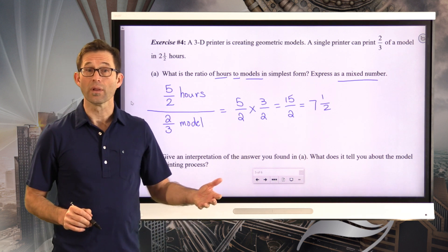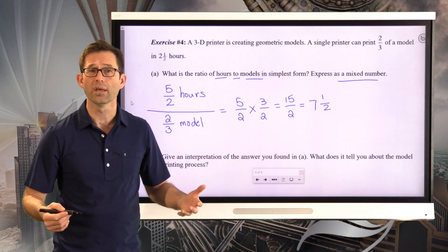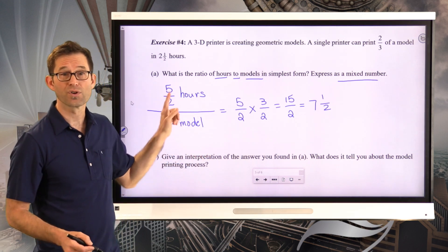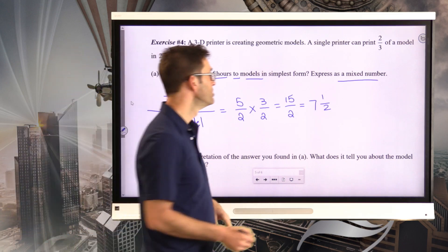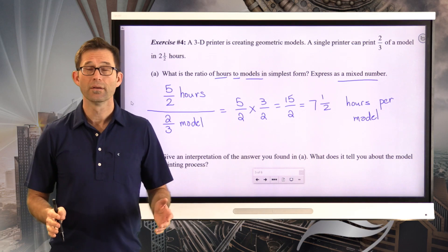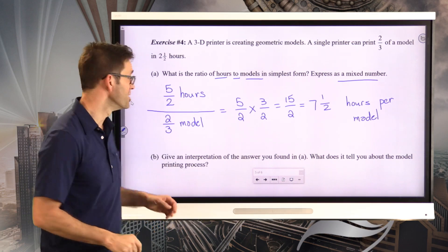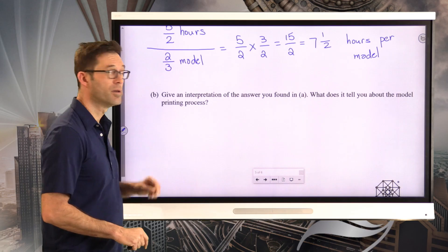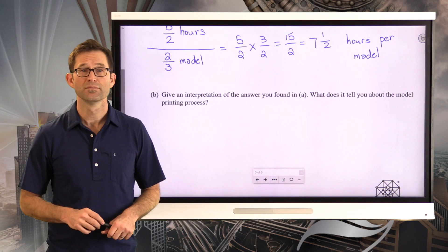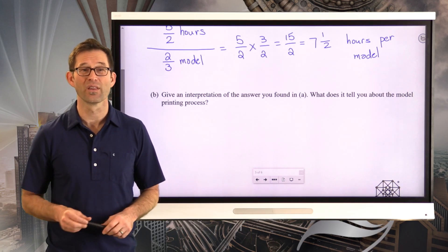Now specifically, what are my units? Units are key here in order to be able to interpret in letter B what's going on. So my units are hours per model. And now letter B should be a piece of cake. Given interpretation of the answer you found in A, what does it tell you about the model printing process? Pause the video now and see if you can give an answer to letter B.